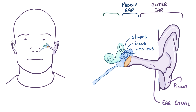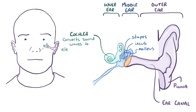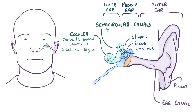And finally there's the inner ear, which has very special tissue structures called the cochlea, which converts sound waves into electrical impulses for the brain, and the semicircular canals which help with balance.